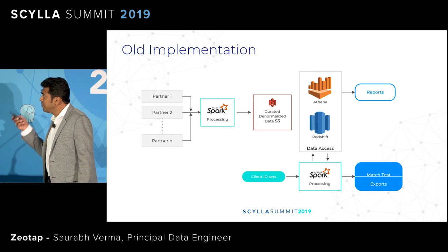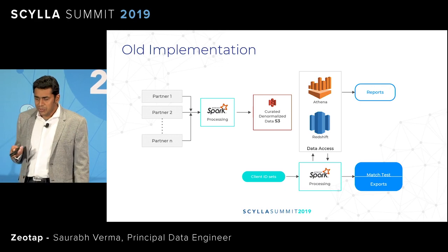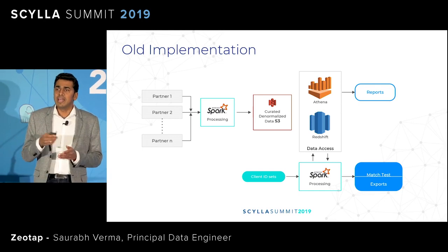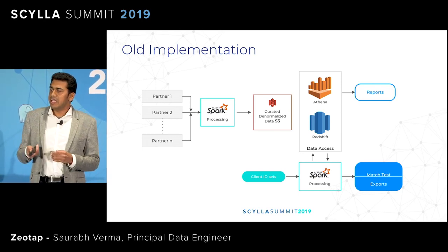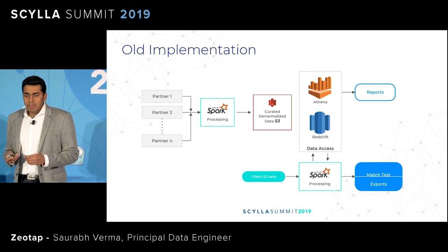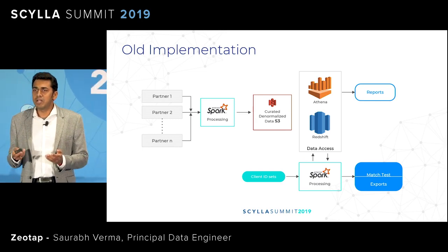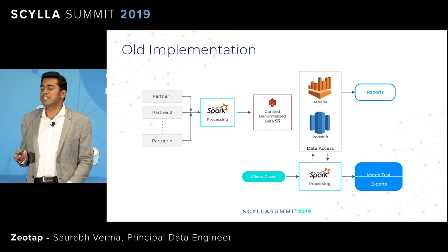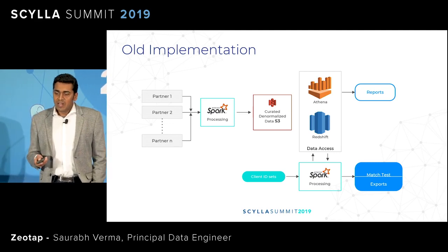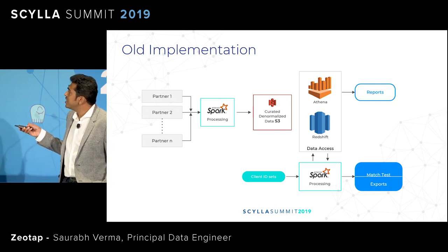Quickly skimming through the V1 or MVP implementation, which is a classic batch job where you have Spark processing, create a dedupe merge and snapshot in S3. We have Athena on S3 for ad-hoc queries, and the match test and export is via Spark processing via Redshift. This is our old implementation. But when we started crossing the 3 billion scale, we really saw our SLAs going towards 1 plus day, 24 plus hours, while we were looking at SLAs of somewhere around 2 to 3 hours, or less than 6 hours.